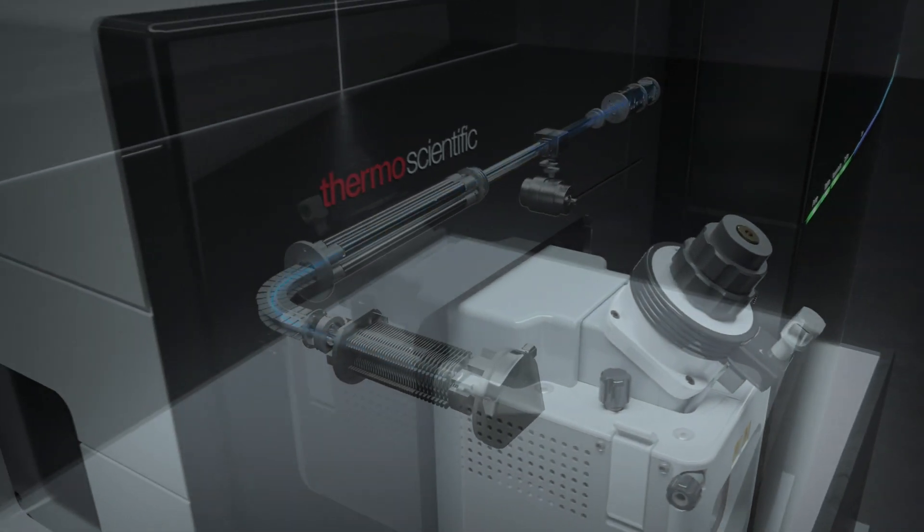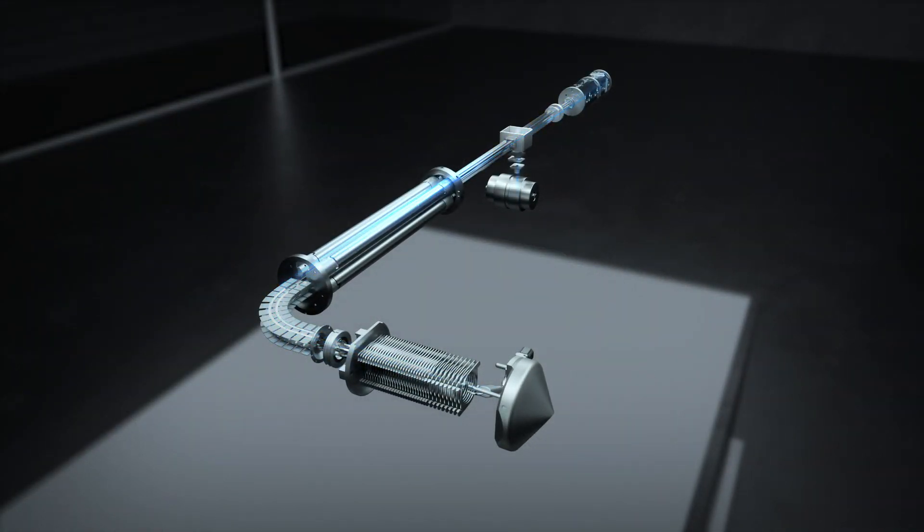The Orbitrap Ascend tribrid mass spectrometer uses a combination of the best quadrupole, linear ion trap, and Orbitrap mass analyzer technology to acquire the richest MSN data.